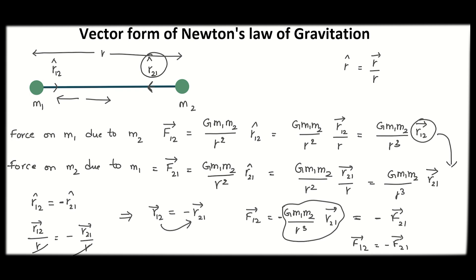This proves that f12 bar is equal to minus f21 bar. It simply tells us that gravitational force forms an action-reaction pair. These two forces, f12 bar and f21 bar, are equal in magnitude but opposite in direction.